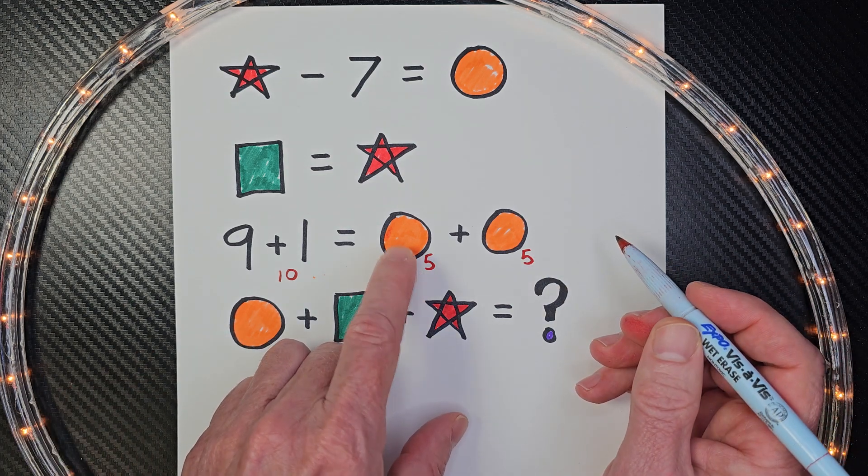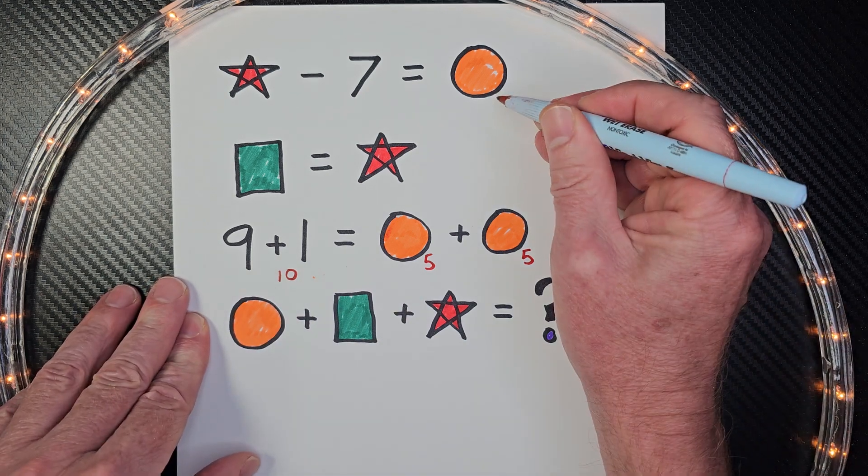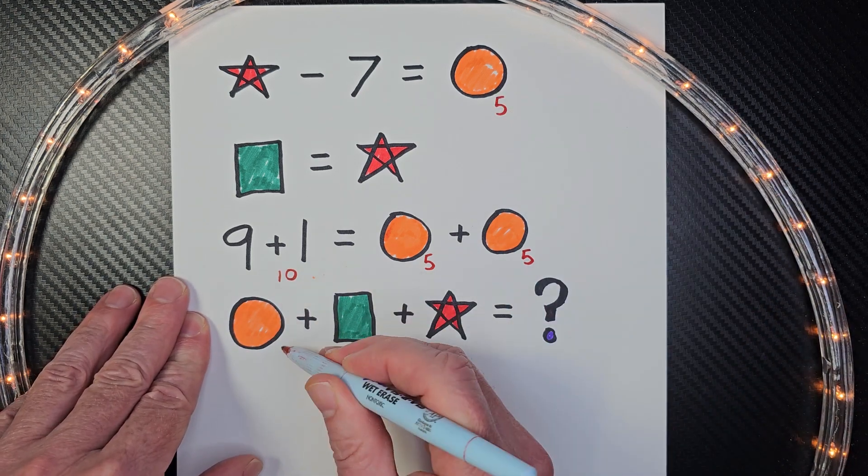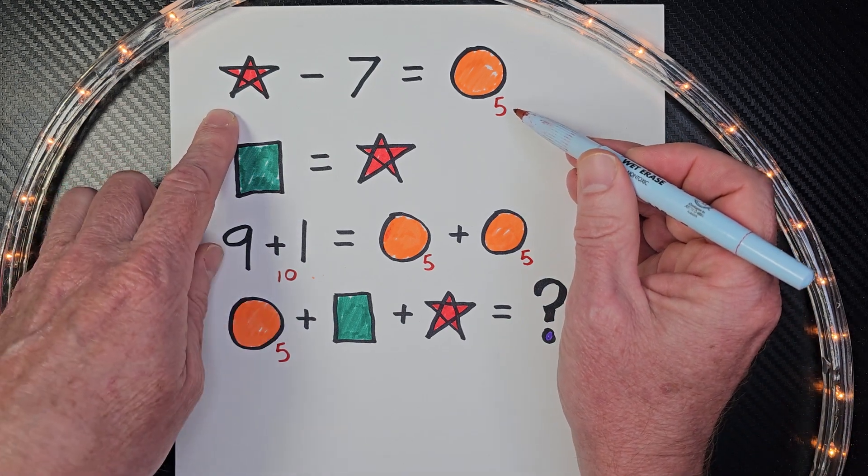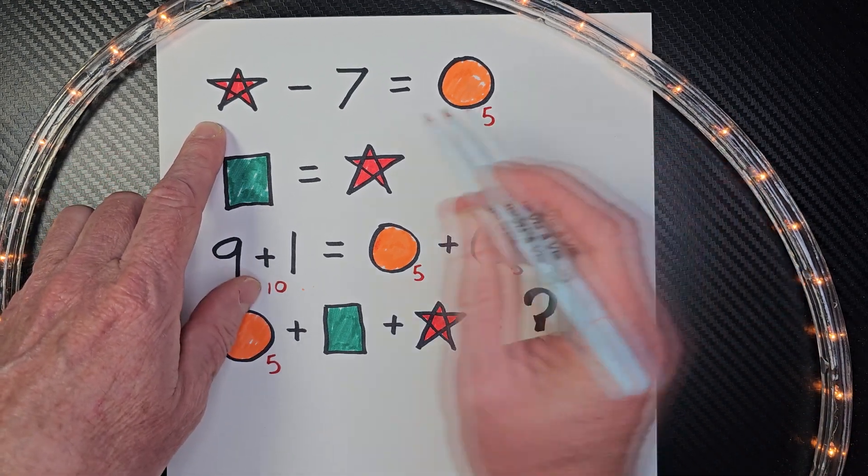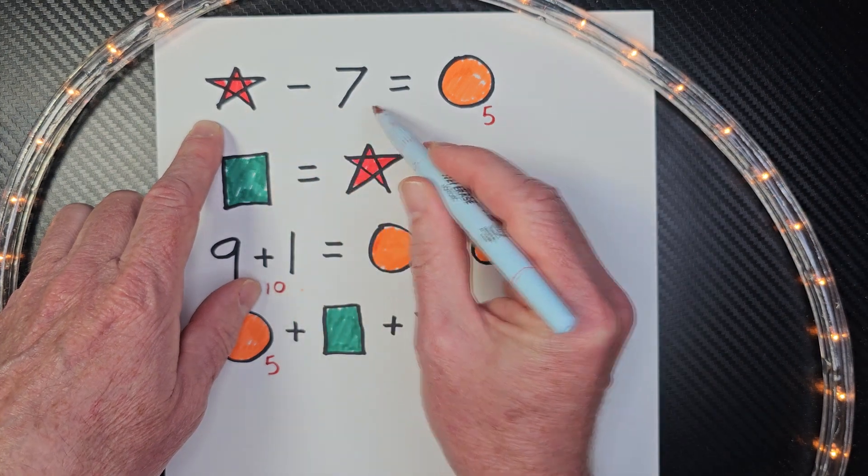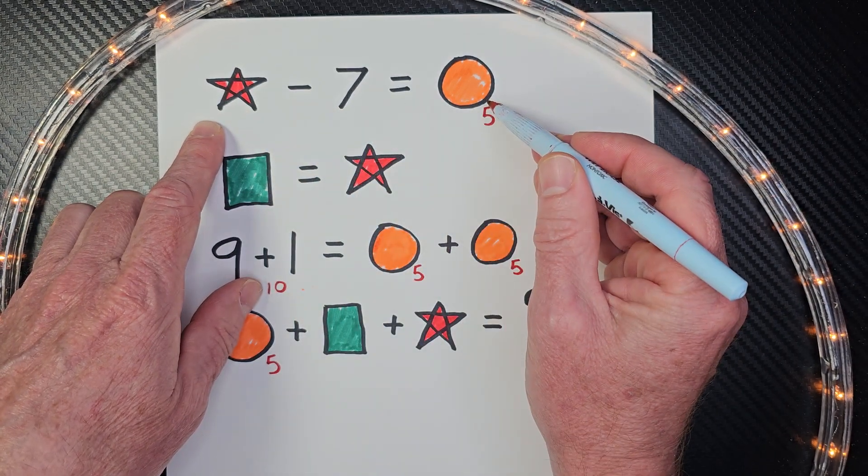Now every time I see a circle, an orange circle, I'm going to go ahead and put 5 right next to it. Now I have enough information to do this problem here. So I have star minus 7 equals 5.